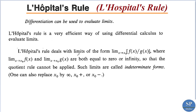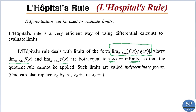This rule deals with limits of the form: limit as x tends to x₀ of f(x) divided by g(x), where both the limit of f(x) and the limit of g(x) as x tends to x₀ are equal to 0, or both equal to infinity, so that the quotient rule cannot be applied to find the limits.